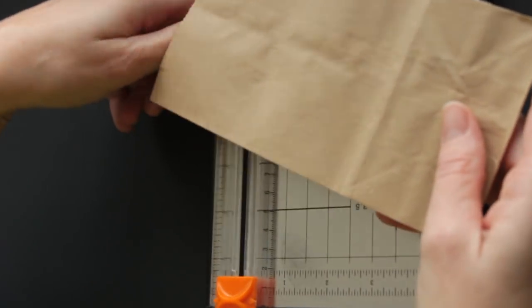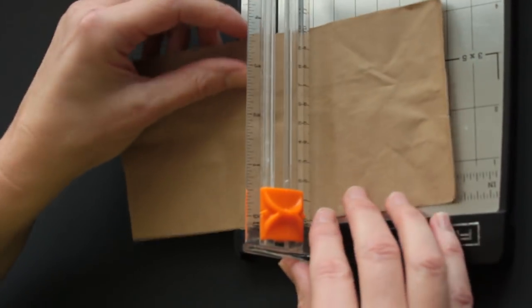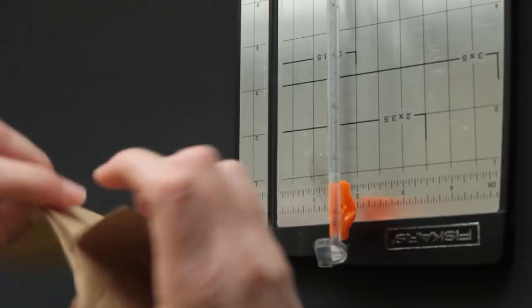To begin with, you cut your lunch bag down to size. I'm going to cut it down to a square, to a 4x4 square.